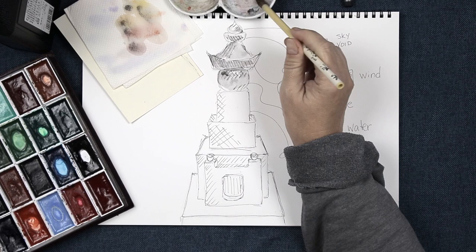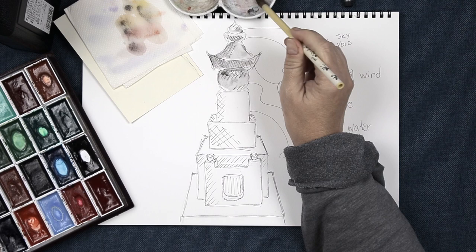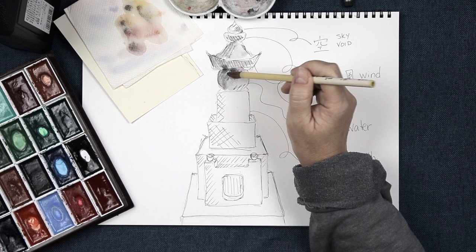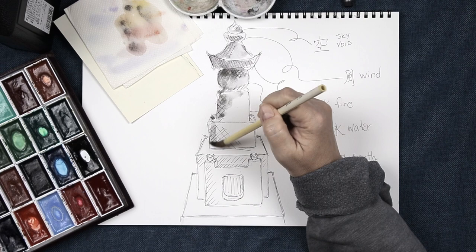And there you have it for the two groups of five elements, the gogyo and the godai. If you want to learn more, there's a great website called Elemental Japan by author, scholar, and frequent Japan resident Jan Williams. I found her site extremely informative.